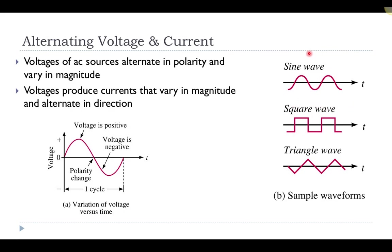In the first picture, we have a sinusoidally varying value — it could be voltage or current — where sometimes the value is positive, sometimes negative, repeating in a sinusoidal way. Other AC waveform types include a square wave, which switches between a constant positive and constant negative value, and a triangular wave, which slowly ramps between negative and positive values, also changing polarity over time.